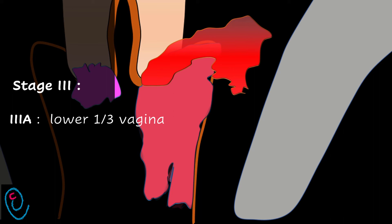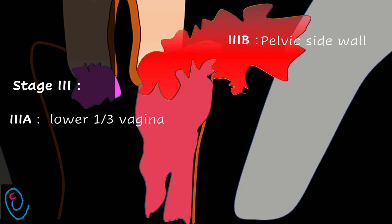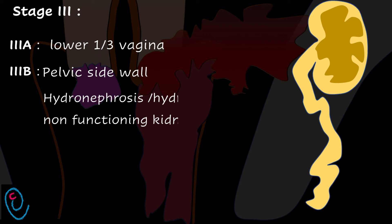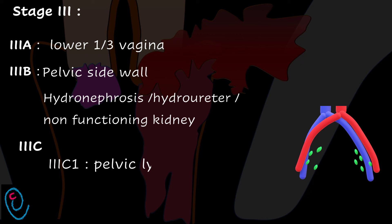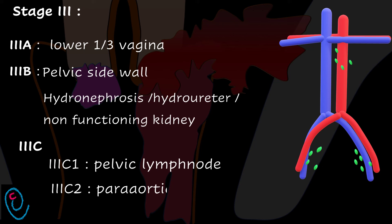Further extension will lead to stage 3. Extension to the lower third of the vagina becomes stage 3a. This extension may affect the ureter, so hydronephrosis, hydroureter, or non-functioning kidney is considered stage 3b. Lymph node involvement is stage 3c — pelvic lymph node metastasis is 3c1, while para-aortic lymph node involvement is 3c2.